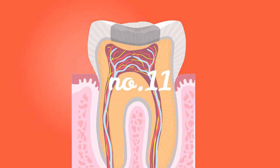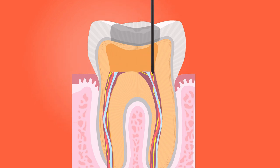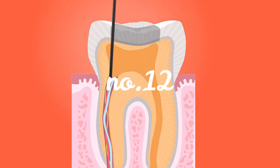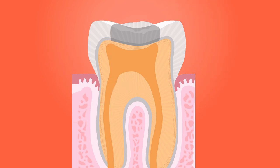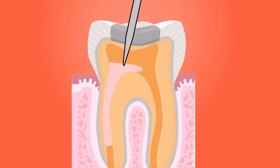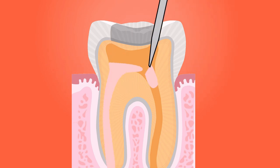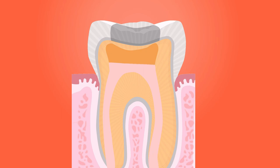Numbers eleven and twelve: carborundum or diamond disc; carborundum or diamond wheels — karbidni ili dijamantski disk.